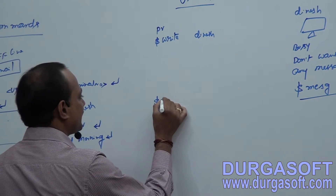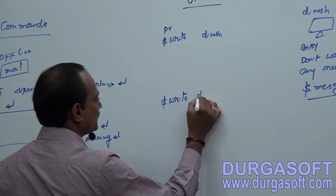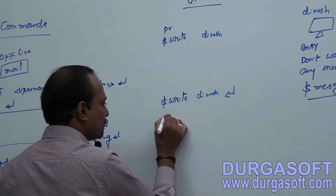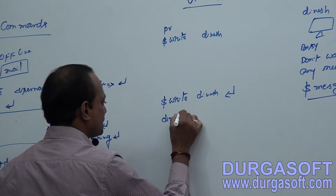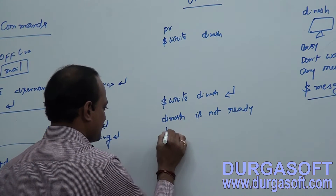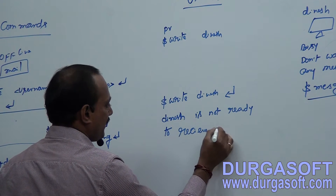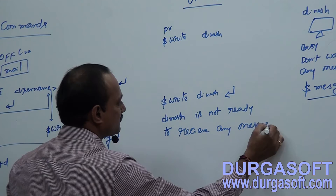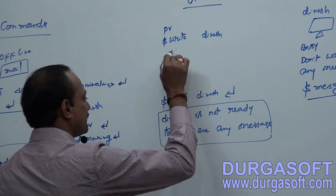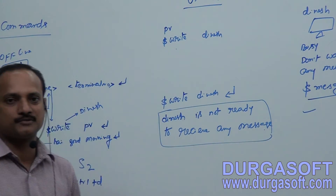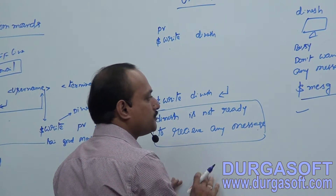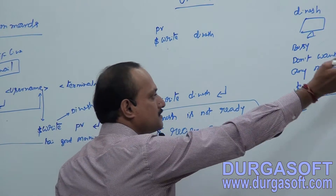Right now, PV is trying to write a message to Dinesh and hits enter. Immediately, PV receives a message: 'Dinesh is not ready to receive any messages.' This message is displayed on PV's system, so PV understands that Dinesh is busy and stops trying to communicate. This kind of message is displayed to any person who tries to send a message to Dinesh.